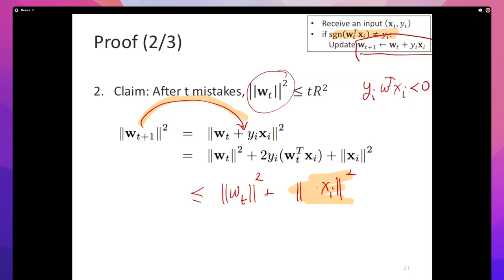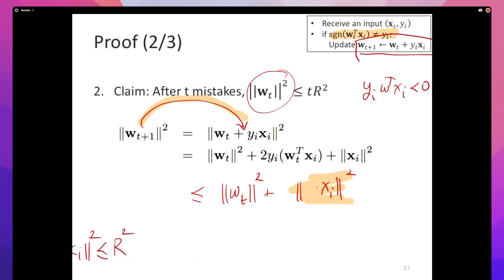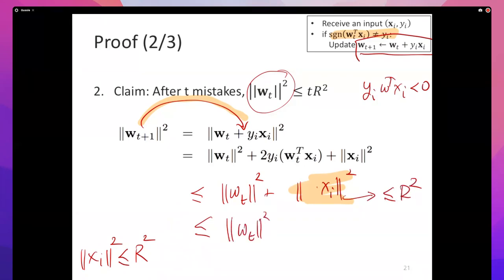The statement of the theorem says every xᵢ is contained in the ball of radius r, so ‖xᵢ‖² ≤ r². Applying another inequality: ‖w_{t+1}‖² ≤ ‖w_t‖² + r². We have this chain: ‖w_{t+1}‖² ≤ ‖w_t‖² + r² ≤ ‖w_{t-1}‖² + 2r² ≤ ... By induction, the norm of w_t squared is less than or equal to t·r².